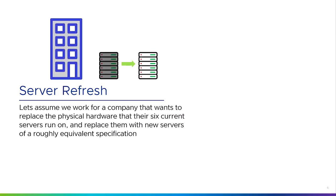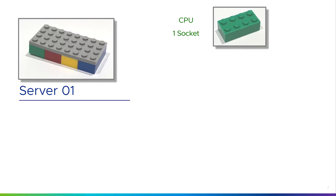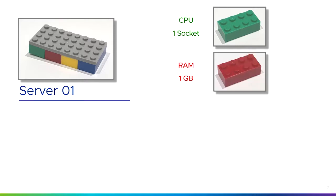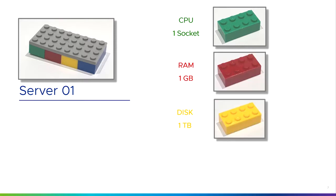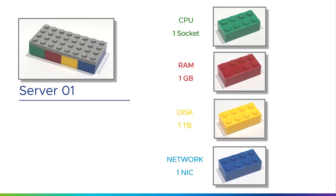Let's assume we work for a company that wants to replace our physical hardware. We've got six current servers and we want to replace them with six servers of roughly equivalent specifications. Server number one: one green block, so it's got one CPU in one socket, one gig of RAM, one terabyte of disk, and one network card.